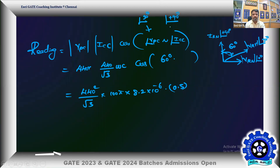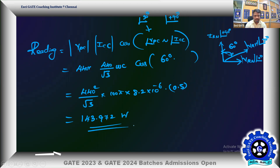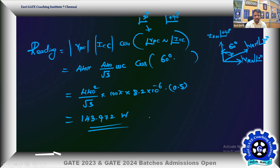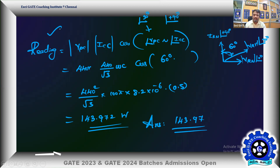This gives the answer of 143.97 watts. Up to two decimal places, the correct answer is 143.97 W. This is a simple problem exploiting the fundamentals of the electrodynamometer wattmeter — its reading depends on the potential coil voltage, the current coil current, and the cosine of the phase angle between them. Thanks for watching — do subscribe for the next problem.